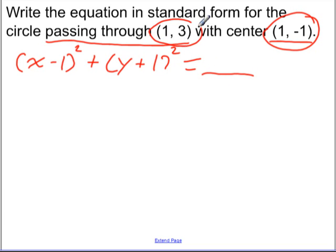So how are we going to calculate the radius? Well, this information is going to help us. If the circle passes through the point (1, 3), and the center is at the point (1, -1), the distance from the center to any point on the circle is the radius. So the distance from the center, this point, to this point, which is on the circle, must be the radius.